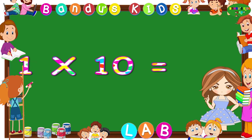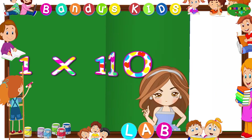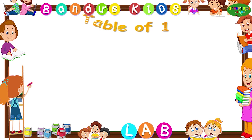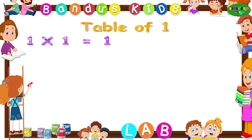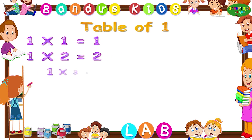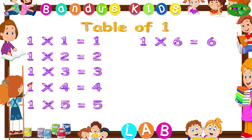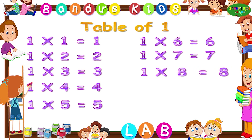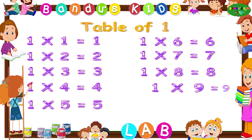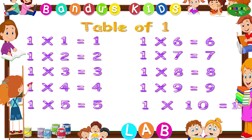One tens are ten. Now let's revise the table of one one more time by singing. One ones are one. One twos are two. One threes are three. One fours are four. One fives are five. One sixes are six. One sevens are seven. One eights are eight. One nines are nine. One tens are ten.